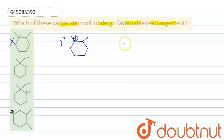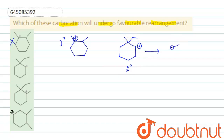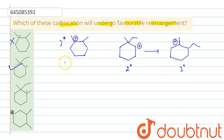The second carbocation has one methyl and one ethyl group, and it is a secondary carbocation. By doing a methyl shift or ethyl shift — for example, if the ethyl group migrates or the methyl group migrates — we get the positive charge on a carbon that makes it a tertiary carbocation, which is more stable. Therefore, it will undergo a favorable rearrangement.